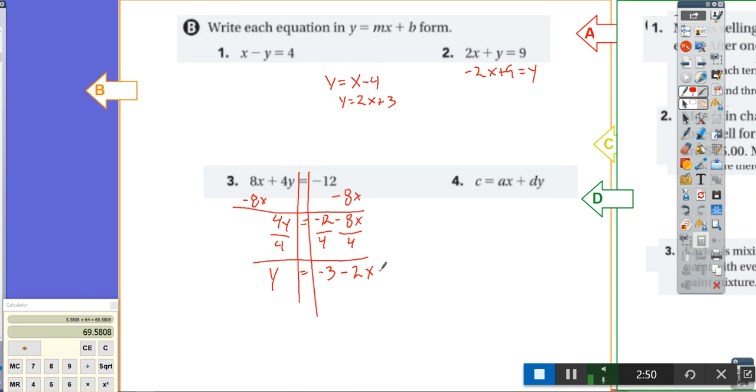So taking what we did here, in this problem, we're going to do the same thing when we don't have any numbers. What's going to be my first step? Alex? Subtract the ax. Let's subtract the ax. Because remember, we want this y by itself. So minus ax, minus ax. Can I combine negative ax with c? No. So I have c minus ax is equal to dy.